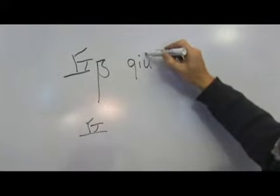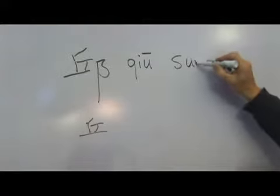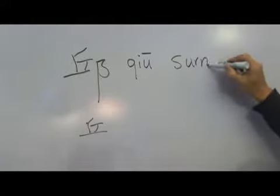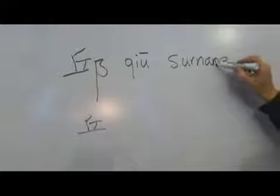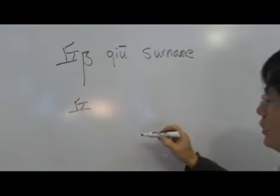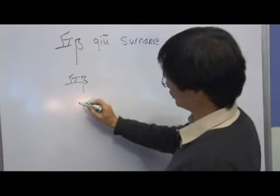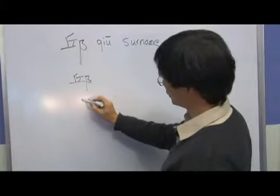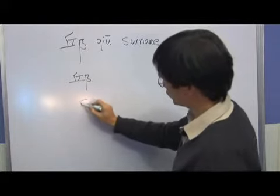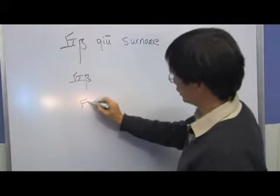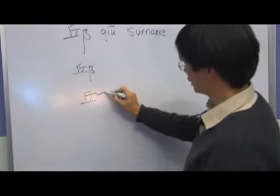Qiu is a surname. The character means hill or mountain. To write it: 撇 (left-falling stroke), 樹 (vertical), 橫 (horizontal), 樹 (vertical), 橫 (horizontal), 橫 (horizontal).